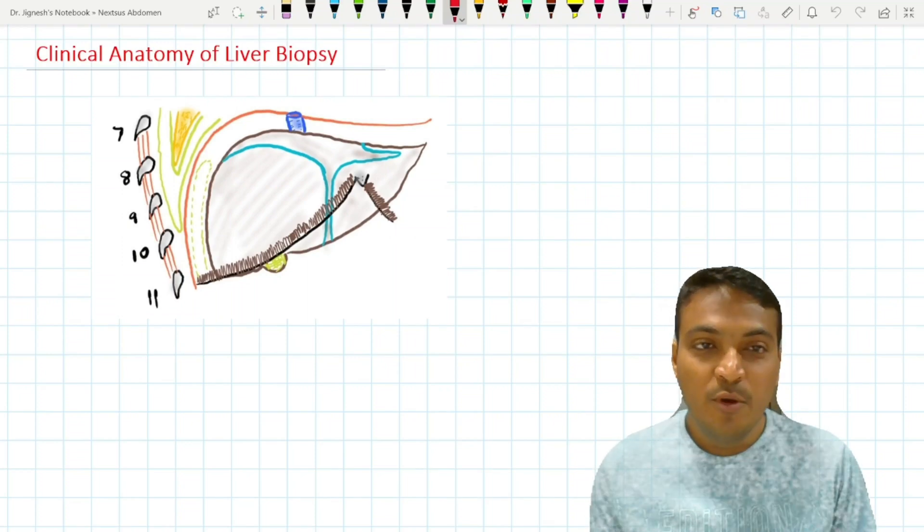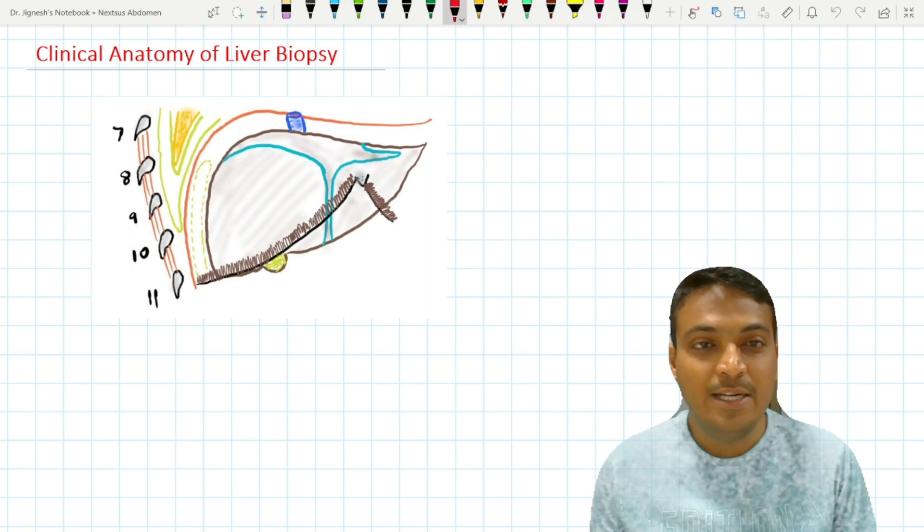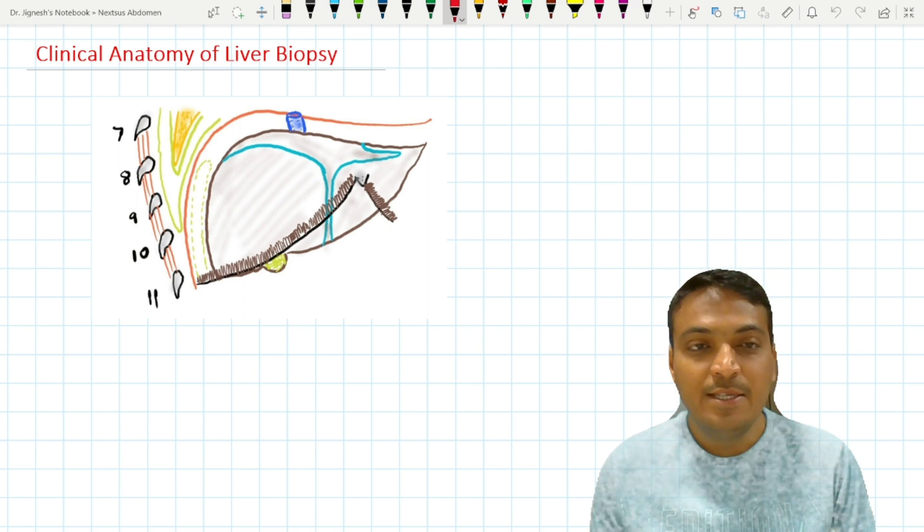For understanding the clinical anatomy of the liver biopsy, we need to understand the relations of the right surface of the liver. When we see the relations of the right surface of the liver, it is related to 7th to 11th rib along with the intercostal spaces between them.